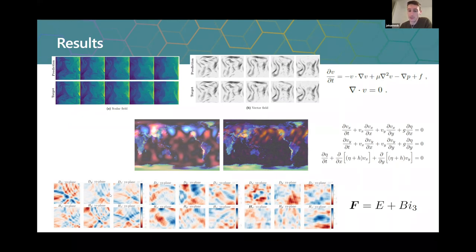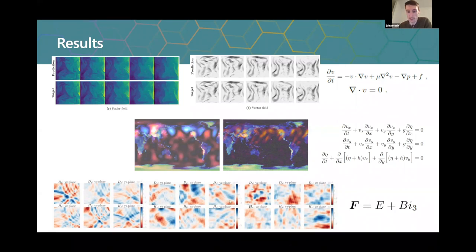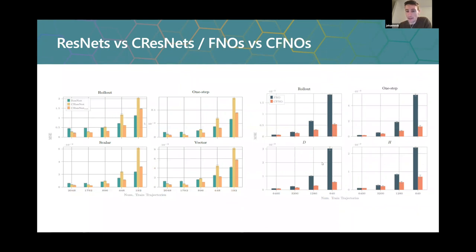For Maxwell's equations in 3D, instead of six separate input fields — three components each for electric and magnetic fields — they are encoded as one multivector with three vector parts and three bivector parts. Results showed a huge performance boost from Clifford layers, because the model now treats them as one object instead of many separate channels that the model must internally disentangle.